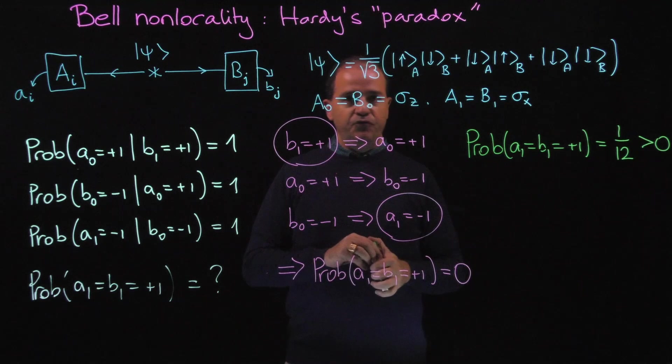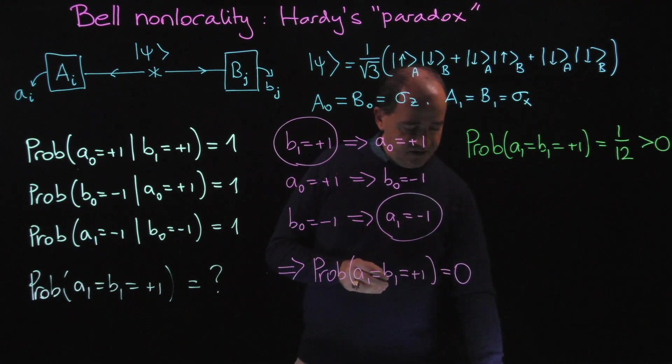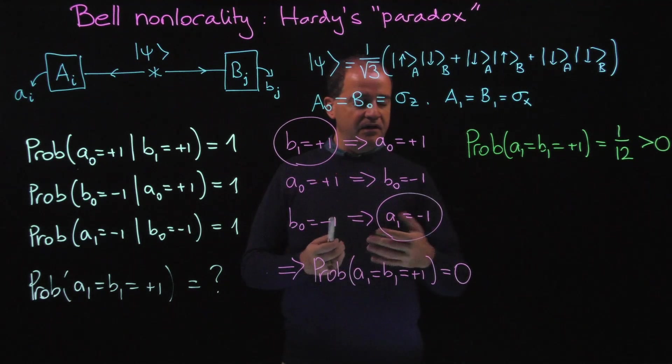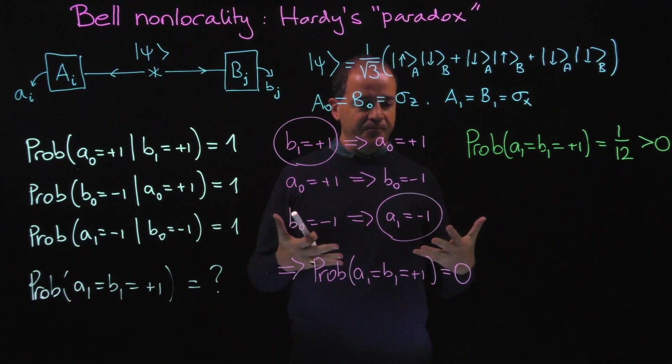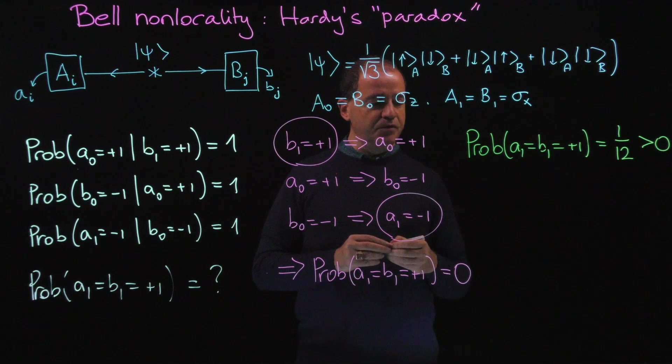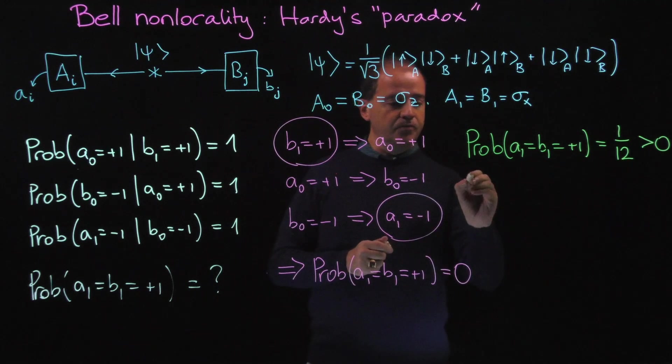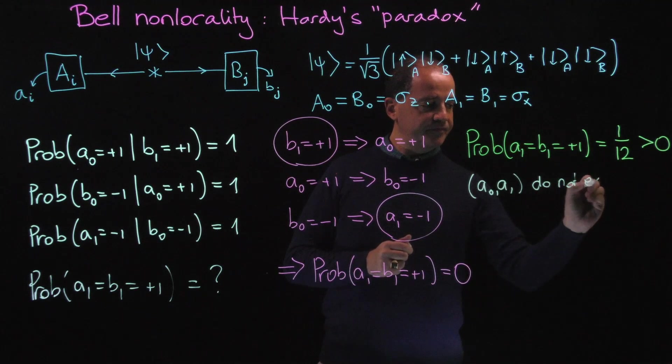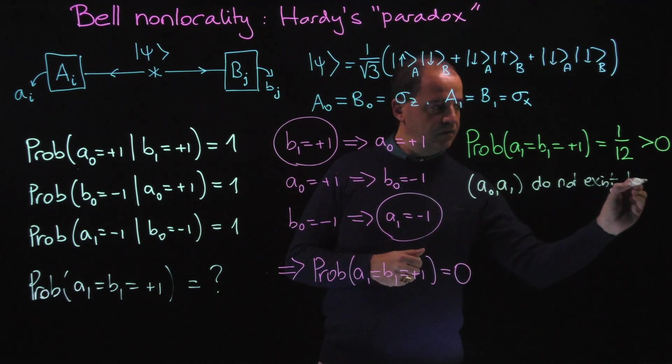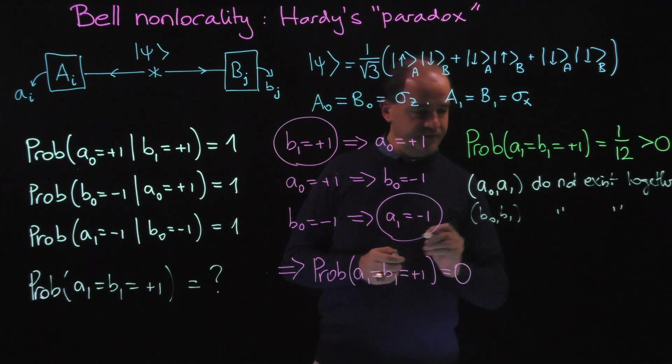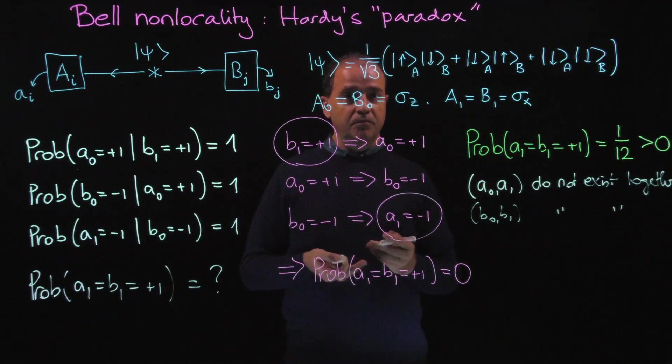How can quantum theory defeat classical logic? The fact is that in this logical chain, we were assuming that all these numbers—B1, A0, B0, and A1—in a sense exist together. But in quantum theory and in nature, this is not the case. The results of the measurements do not pre-exist. In particular, A0 and A1 do not exist together, and B0 and B1 similarly.